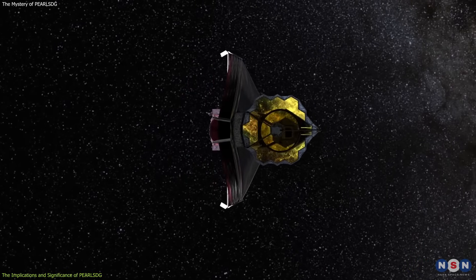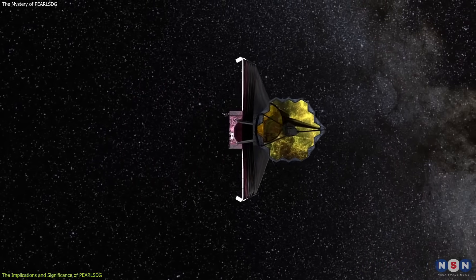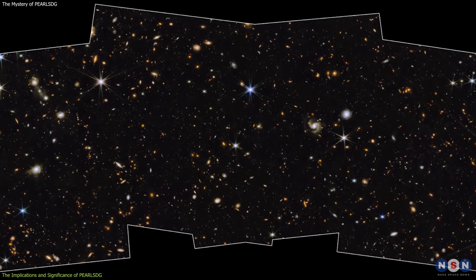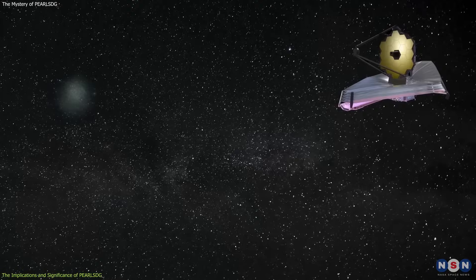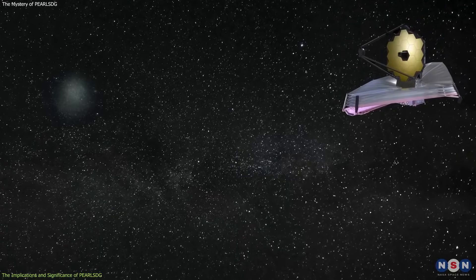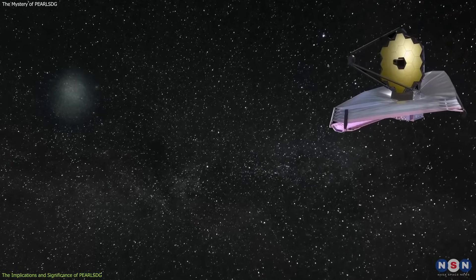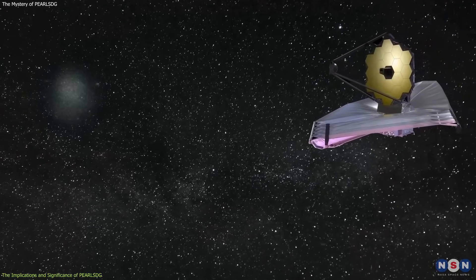In fact, it was found by accident, while James Webb was observing a galaxy cluster in the NEP, as part of the PEARLS project. The astronomers noticed a tiny and dim blob of light in the background, and they realized that it was a new galaxy that had never been seen before.